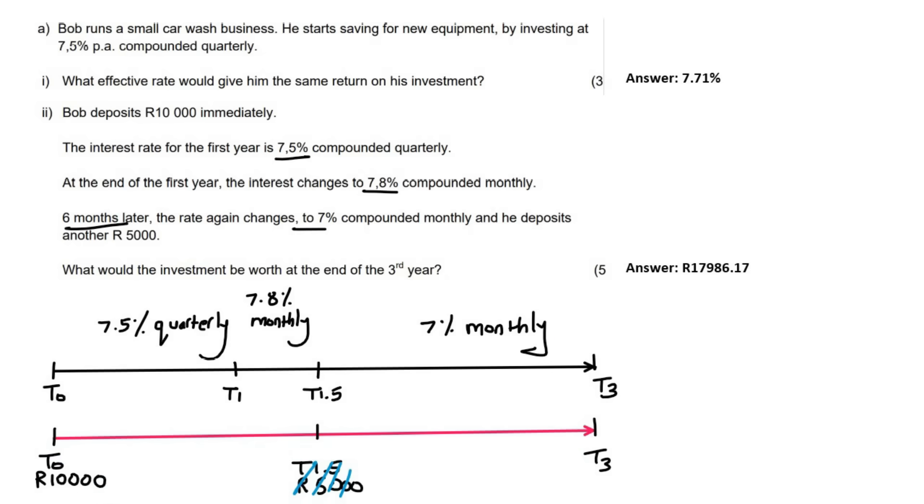So we know that this is all compounded, and so we can say A equals P(1 plus i/n)^n. That's the formula we're going to use. So the total amount that this person is going to have. So he starts with 10,000, and the first interest rate is this one over here, and that's going to be—actually, let me do this in a different color.